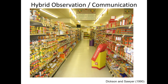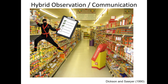Next, I'd like to provide an example of a hybrid observation and communication-based marketing research study. This study comes from Dixon & Sawyer in 1990 in the Journal of Marketing. Marketing researchers were hired to act as secret agents inside a grocery store — they pretended like they were stocking shelves. As people approached a particular section of the grocery store, the researchers tracked the number of different products people touched, how much time they stood in front of a shelf before making a purchase decision, and ultimately which product they selected. This was the observation component.